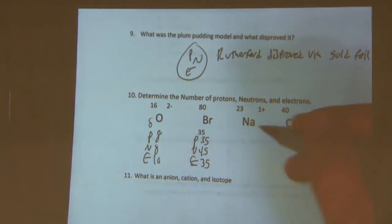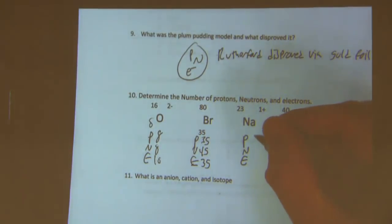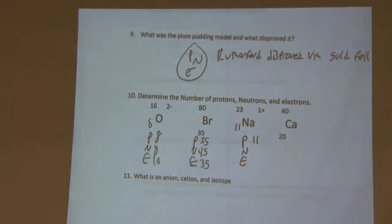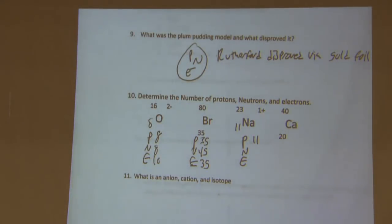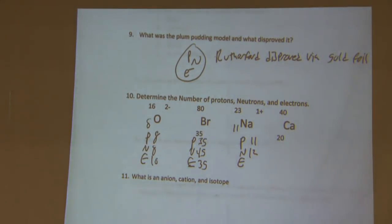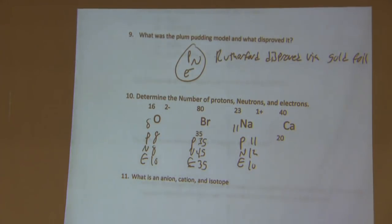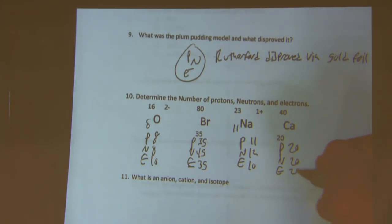For sodium with a plus-one charge: 11 protons, 12 neutrons, and 10 electrons. We have 10 electrons because of the plus-one charge — we can't change the protons since that would change the atom. For calcium with no charge: 20 protons, 20 neutrons, and 20 electrons.